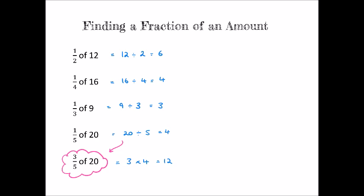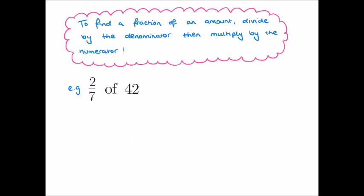To find three fifths of 20, we begin by dividing 20 by the denominator — 20 divided by 5 gives us 4 — and then multiply that by the numerator. In general, to find a fraction of an amount: divide the number by the denominator, then multiply that new number by the numerator. Divide by the bottom, times by the top. For example, 2 sevenths of 42: divide 42 by the denominator 7, giving 6; then multiply by the numerator 2 — 6 times 2 is 12. So 2 sevenths of 42 is equal to 12.